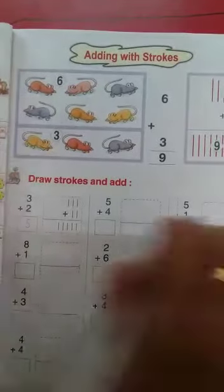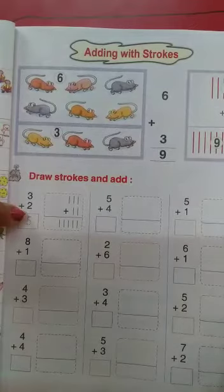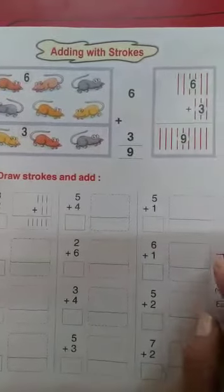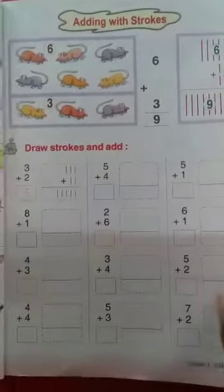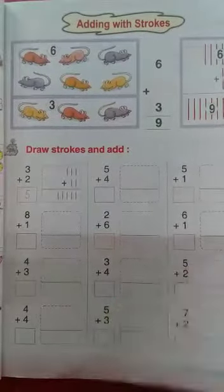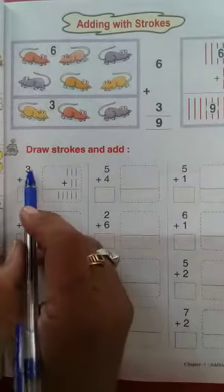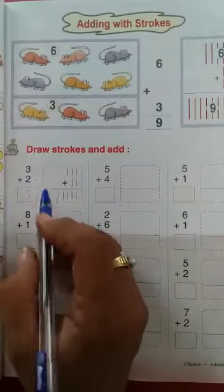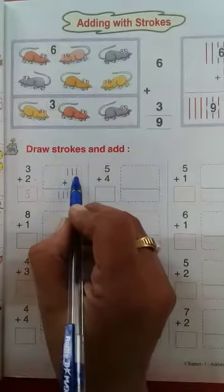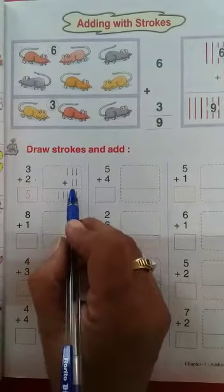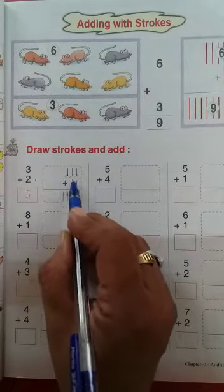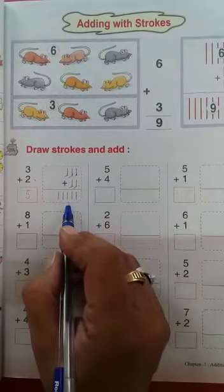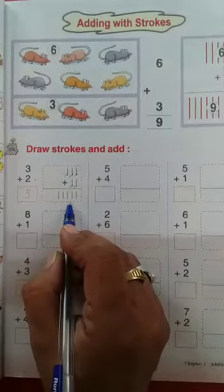Now page number 39. Adding with strokes. Yaani inko hum ko kisse? Strokes. Yaani line khich ke hum ko add karna hota hai. To draw the strokes and add. So first yahan par humko de rakhe 3 plus 2. To 1, 2, 3 lines khich gaye. Then 1 and 2. And then we count karengi. To kitne ho gaye? 1, 2, 3, 4, 5. To kitni lines ho gayi? 5 lines ho gayi. Thik hai?